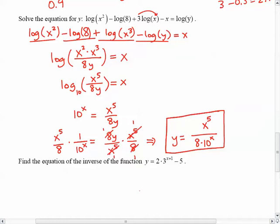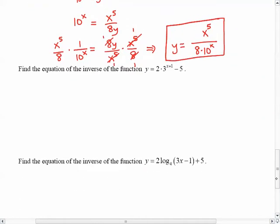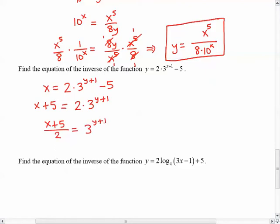What I wanted you to see is how I combine all of the logs into one log. And then just use the conversion from log to exponential to get the y by itself. We're going to do something very similar for the last two, which involve finding the inverse of these two functions. So remember the way we find the inverse is to switch the x and the y first. And then I'm going to add 5, so move the 5 over.